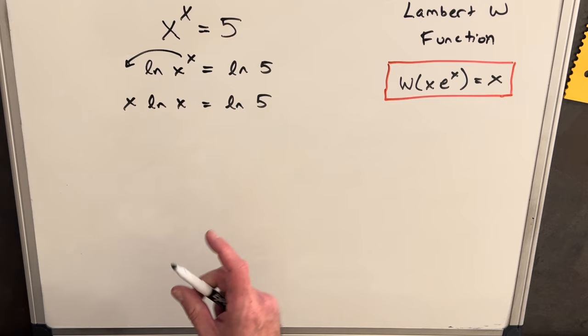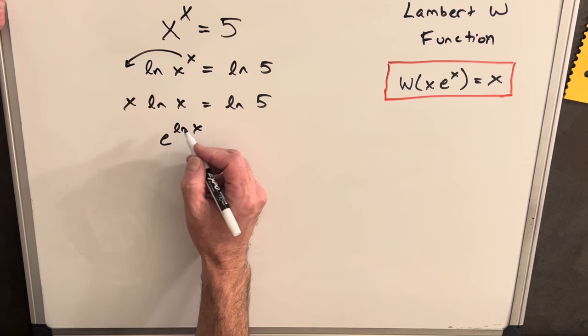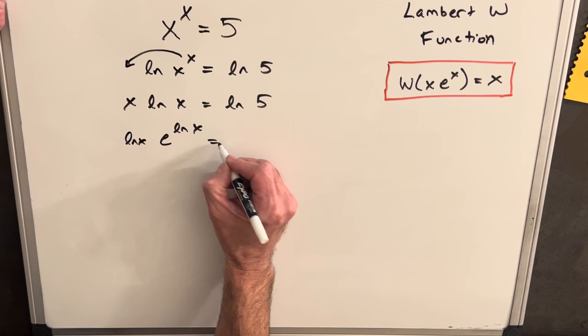So I need to get an e in this expression. And what I can do is I can write this x as e to the ln x just using what we know with our rules of the natural log that these would cancel. So this is just the same thing as x. And then we'll have our ln x here equals ln 5.